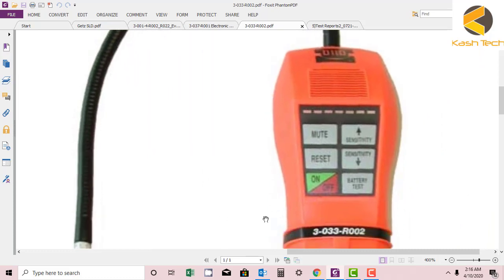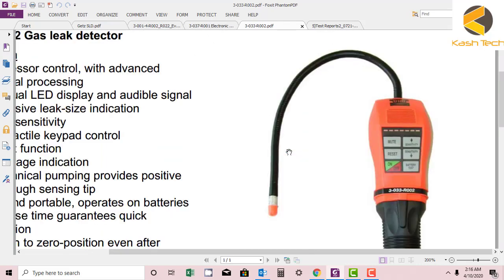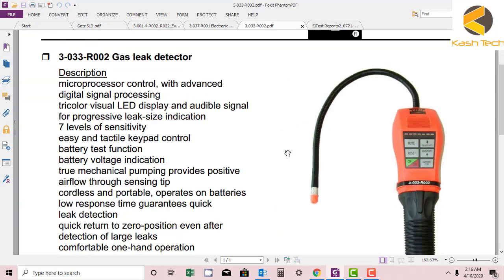And here the reading will come. You will hear a beep if you find some leakage. So this is how this device is working. A little bit of description of the device: microprocessor control with advanced digital signal processing, tri-color visual LED display and audible signal for progressive leak-size indication.